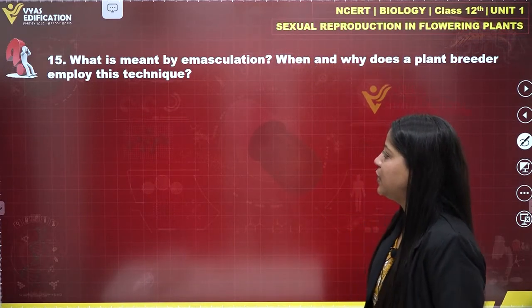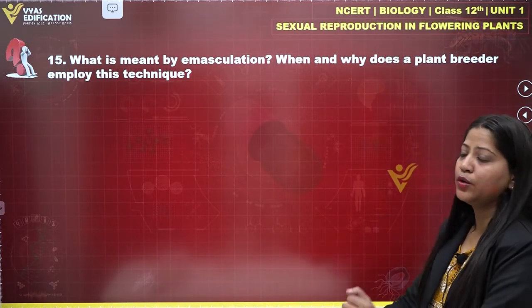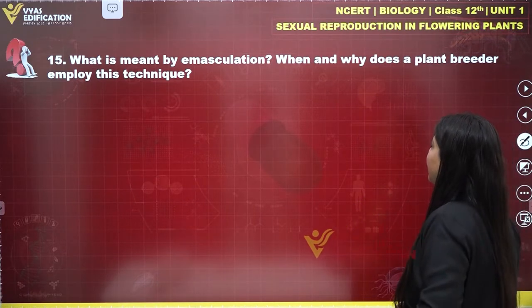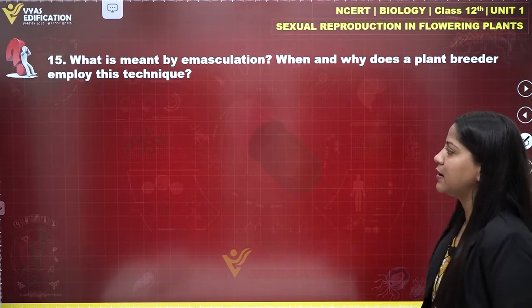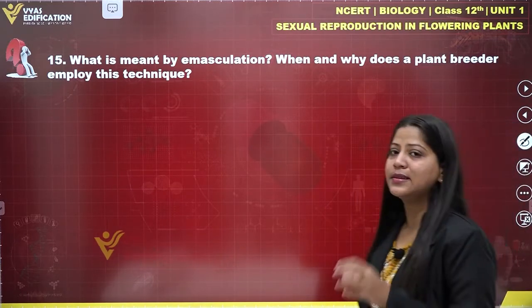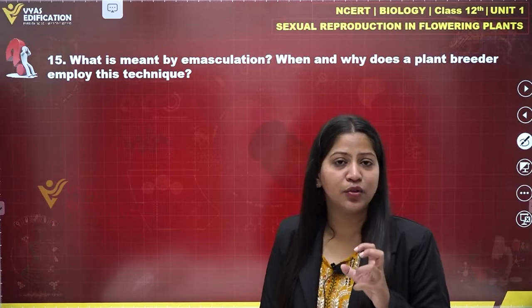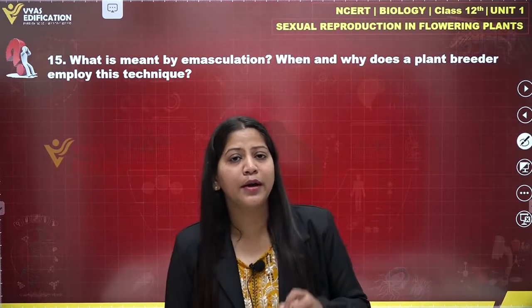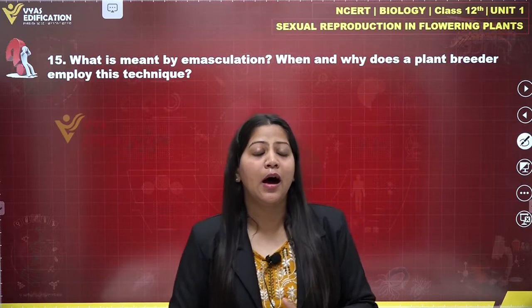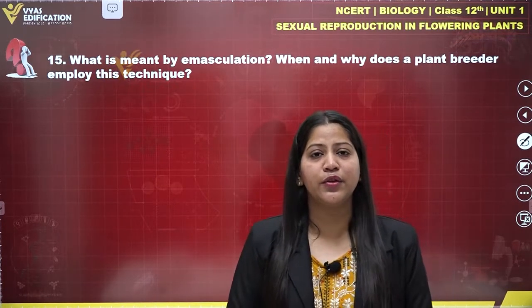Now let's talk about question number 15: what is meant by emasculation, and when and why does a plant breeder employ this technique? Emasculation is a technique employed by plant breeders during artificial hybridization. So this is a part of artificial hybridization.